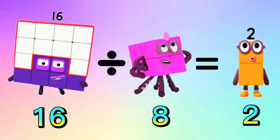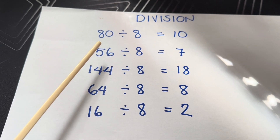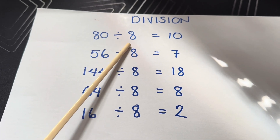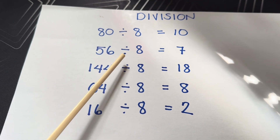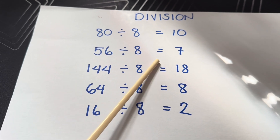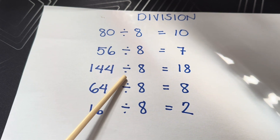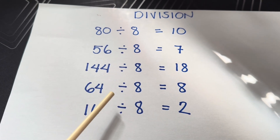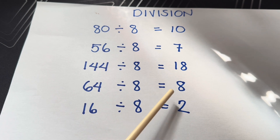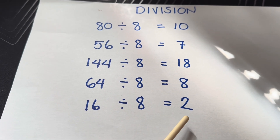Now, let's do a recap. Let's learn division. 80 divided by 8 is equals to 8. 144 divided by 8 is equals to 8. 64 divided by 8 is equals to 8. 16 divided by 8 is equals to 2.